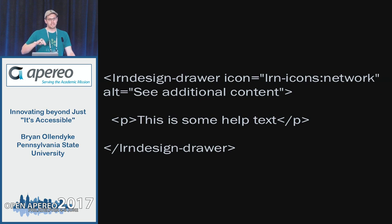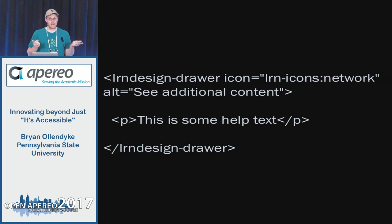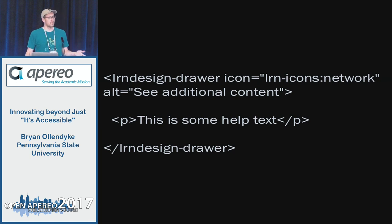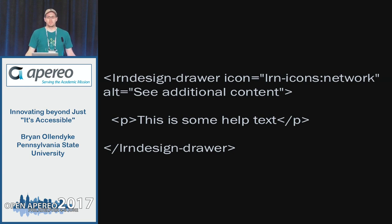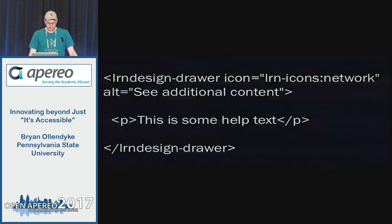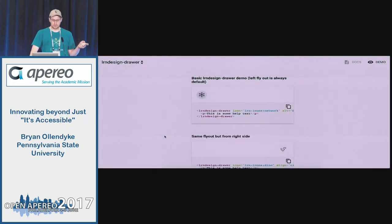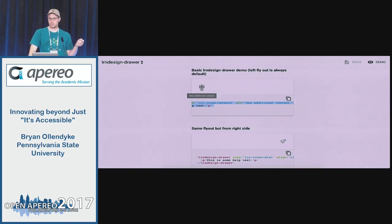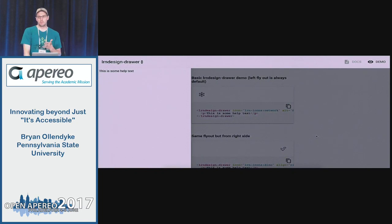The other fun thing is you're basically creating a by-reference pattern. Say all those accessibility considerations are there but I screwed something up, and it's already rolled out into production and people are implementing it. In the old world, if they were copying and pasting blocks of HTML, you're in a lot of trouble. But in this case, you just update the root element and now every place that's been implemented is accessible. So what we get with the LRN design drawer is a button you can tab to, that on hover shows you what this will do, that when clicked flies open, and has escape key triggering — all of that.